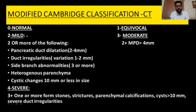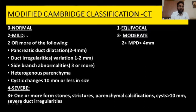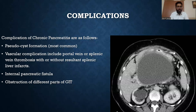Grade 3 is moderate pancreatitis: features of mild plus the main pancreatic duct dilated more than 4 mm. Grade 4 is the most severe form: moderate features plus one or more stones, strictures, parenchymal calcification, cysts more than 10 mm, or severe duct irregularities.